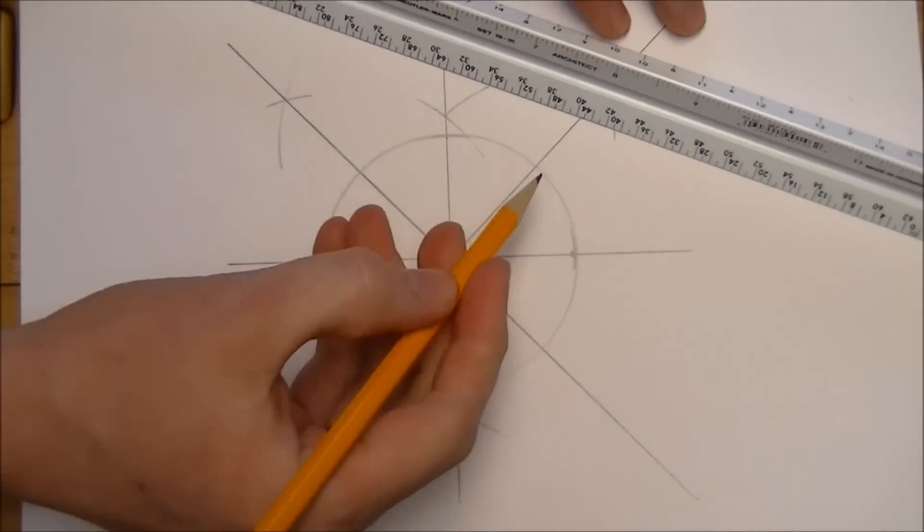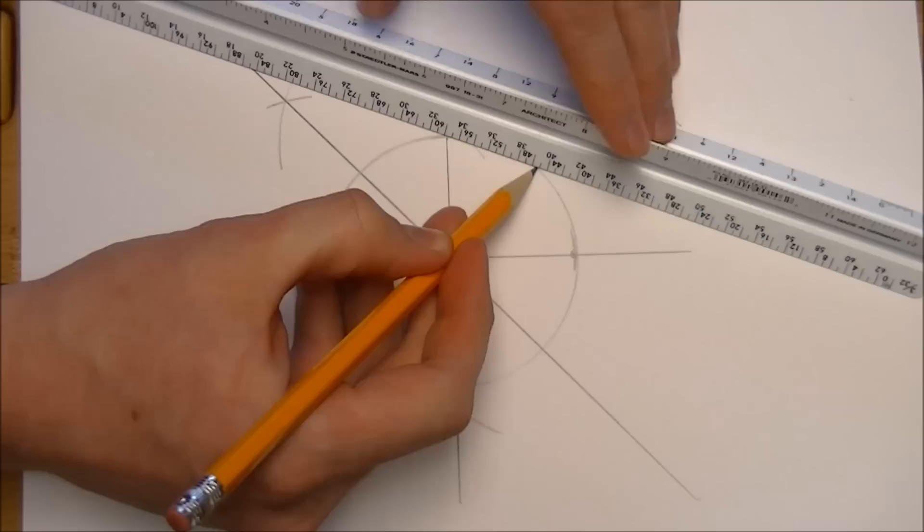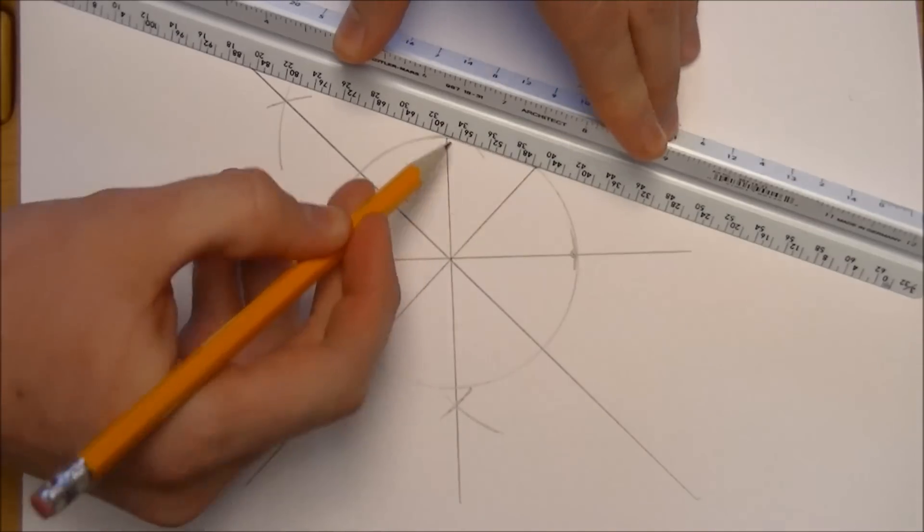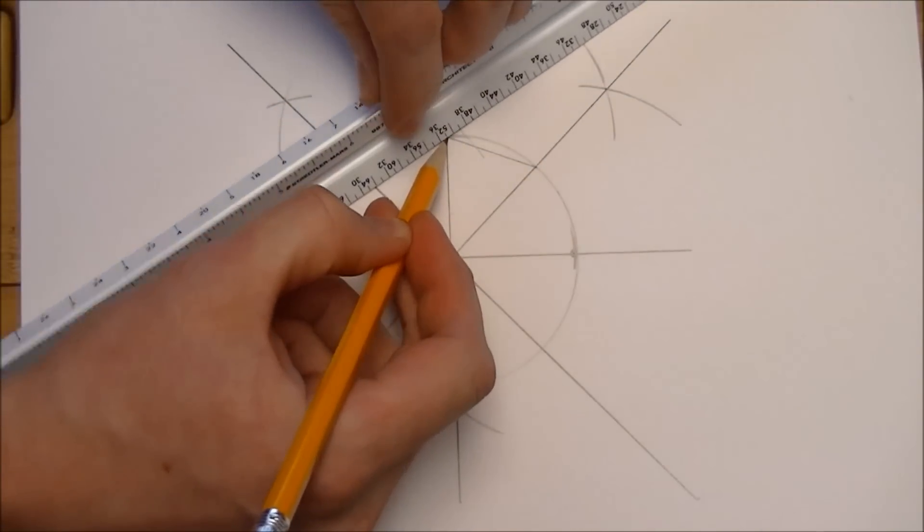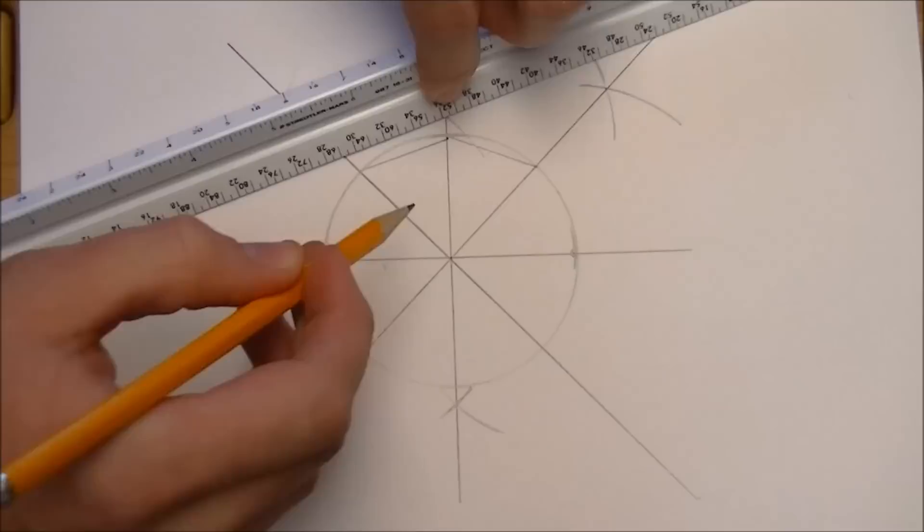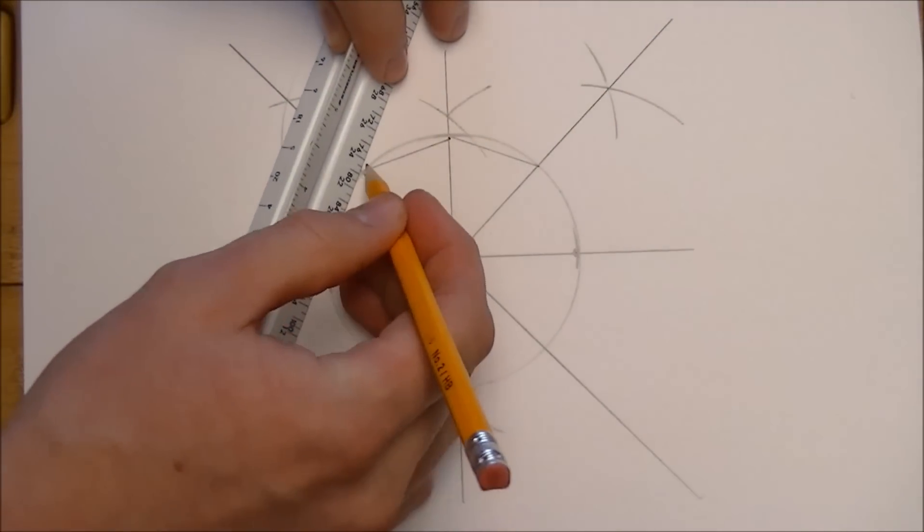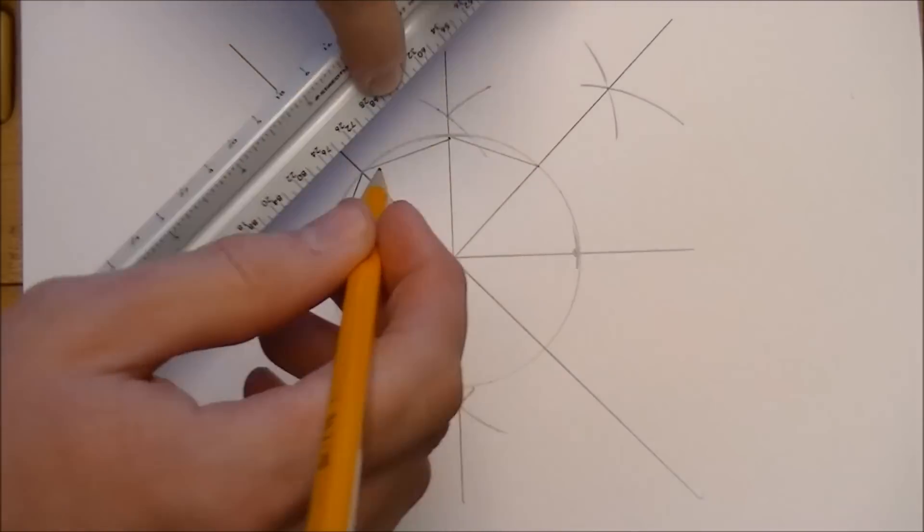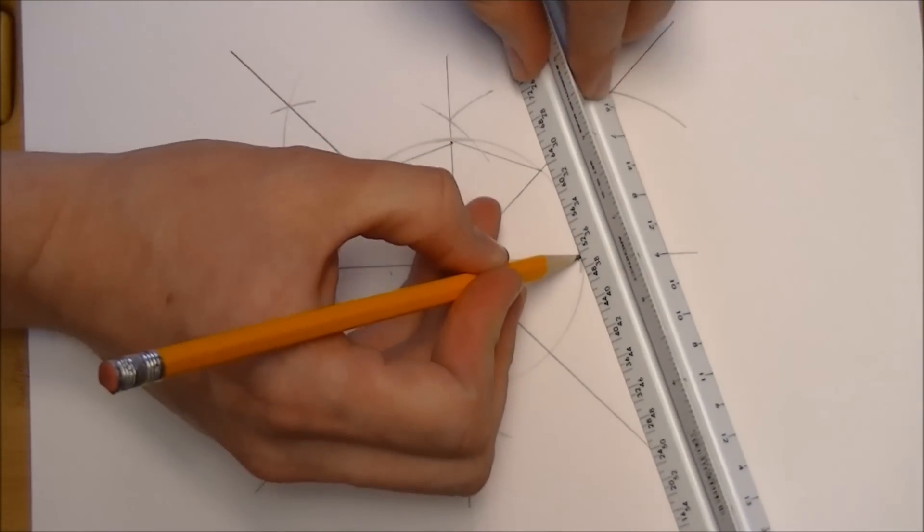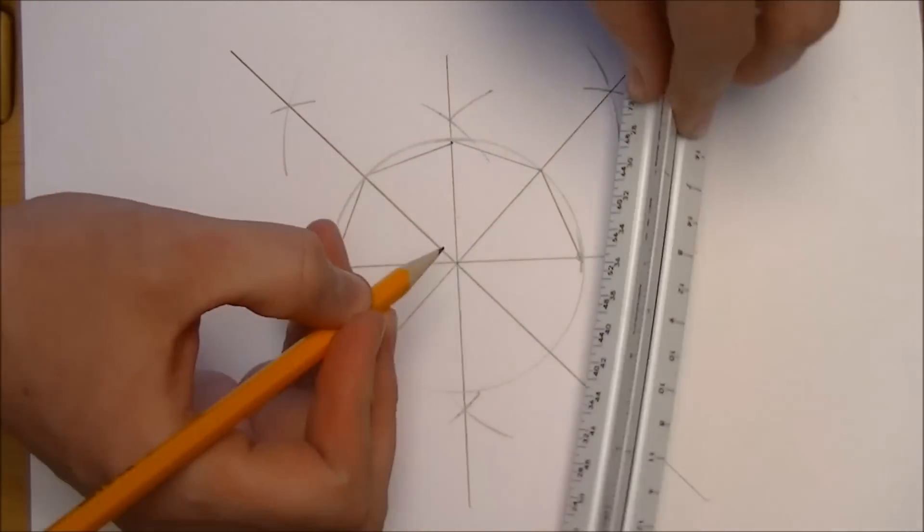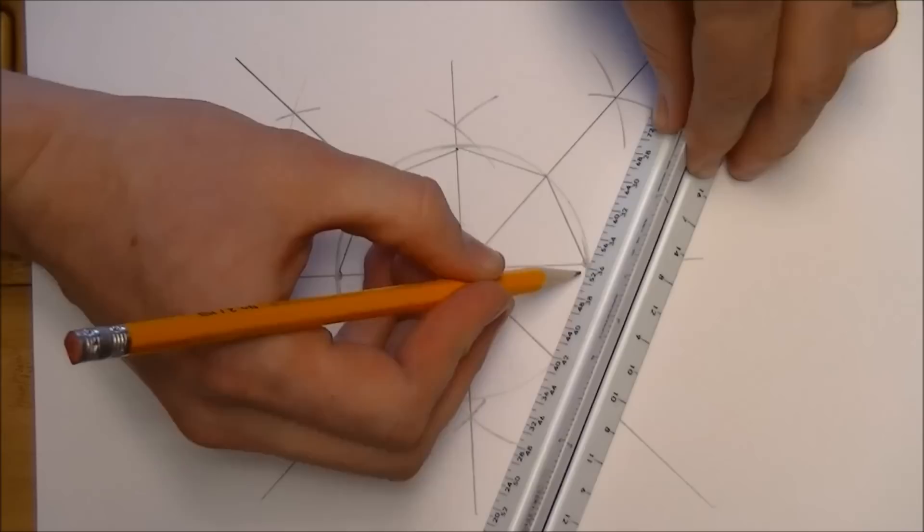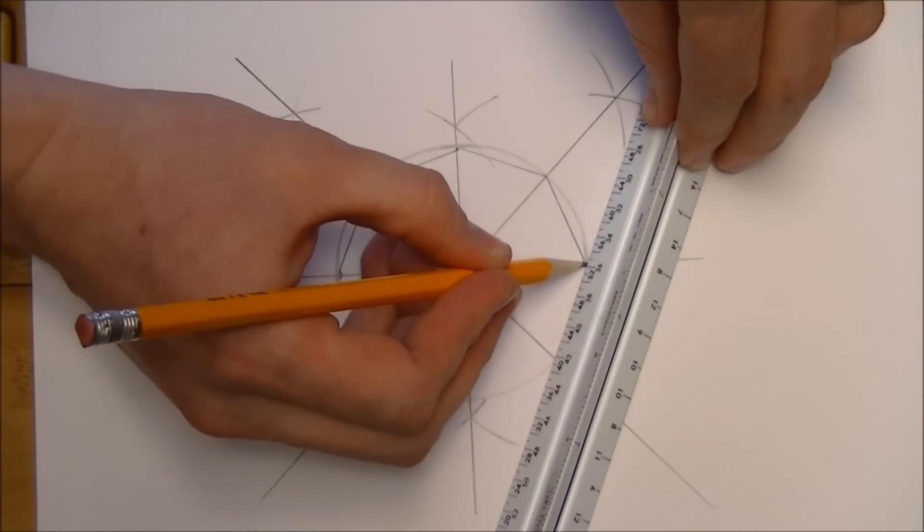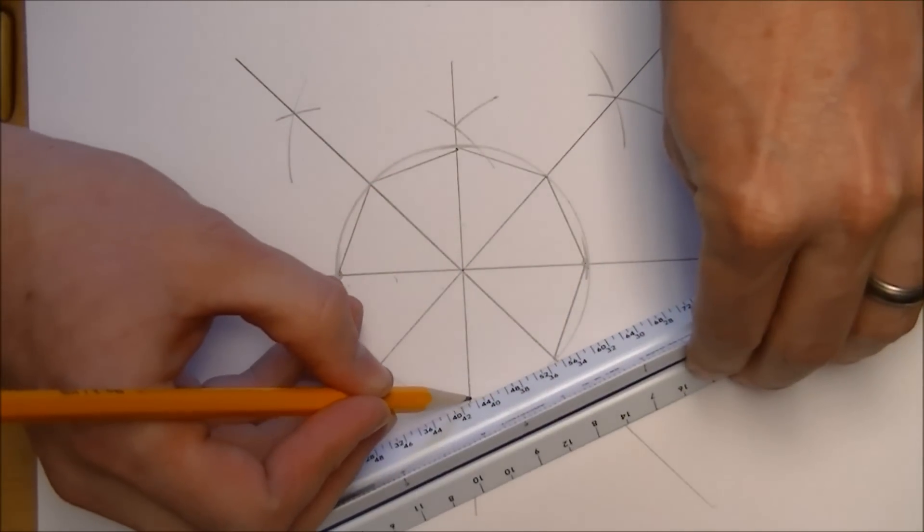And then what I do is I connect where the circle touches each of those lines all the way around. And as you can see here, there are a lot of marks.